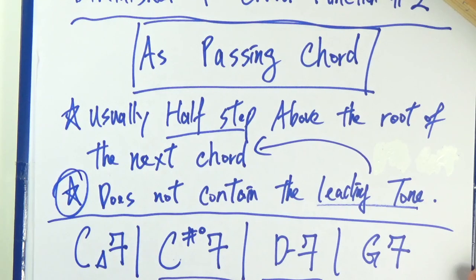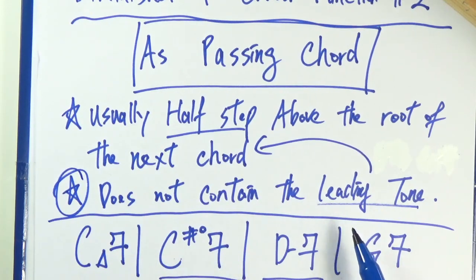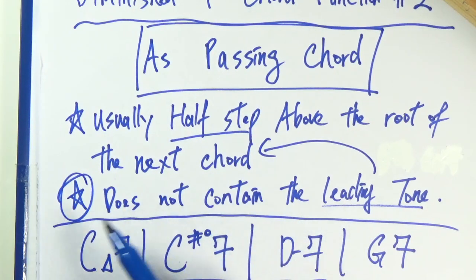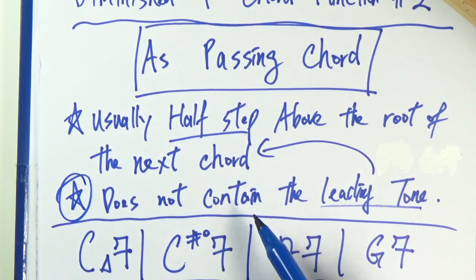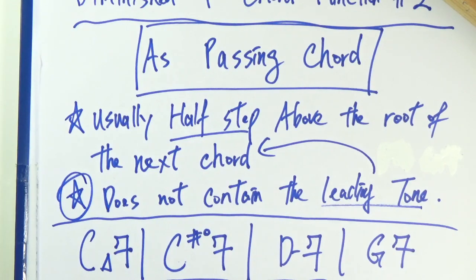Usually, you would see the diminished sound chord being half a step above the root of the next chord. And also number two, the diminished chord does not contain the leading tone of the next chord. So number two here is really important. And if this condition fulfills, then probably you are looking at a passing diminished sound chord.